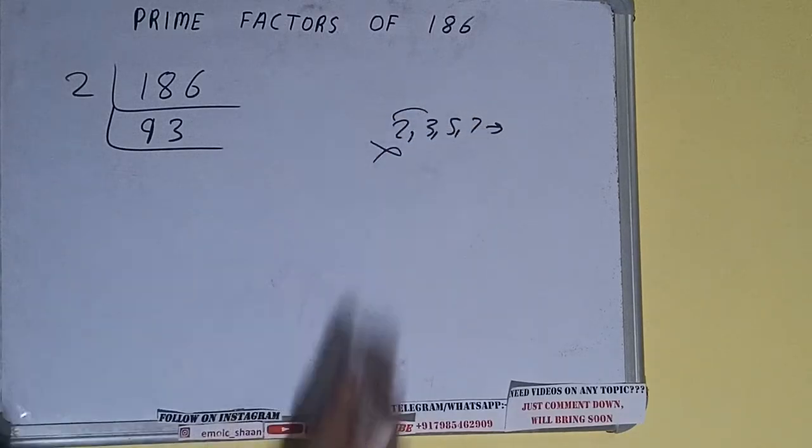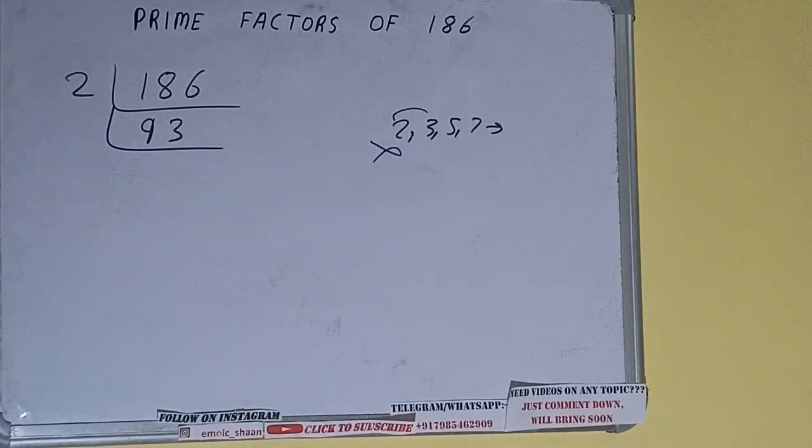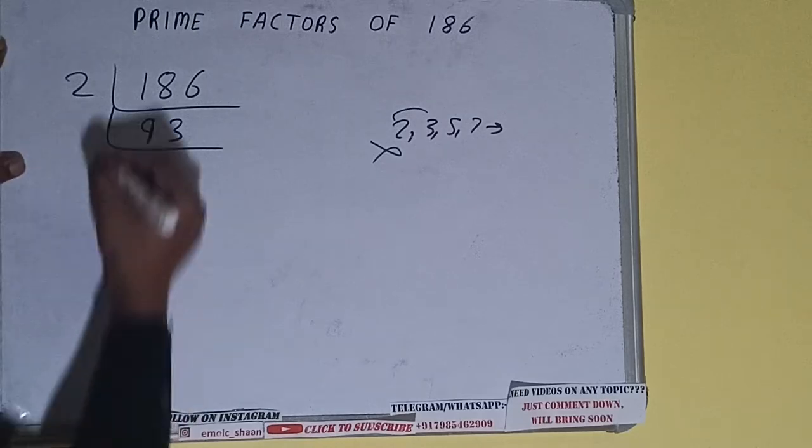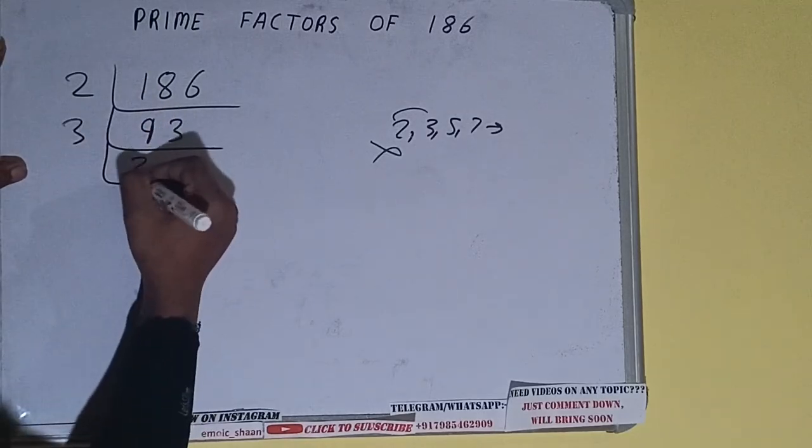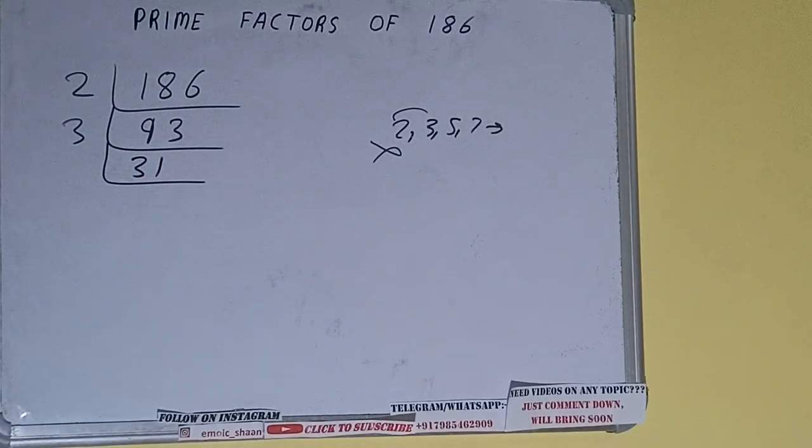So we'll check with the next lowest prime number, that is 3. Is 93 divisible by 3? Yes it is, and we'll be having 31. 31 is not divisible by 3, and 31 is also a prime number.